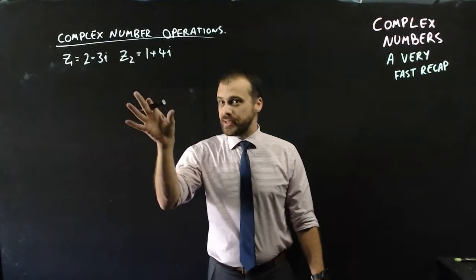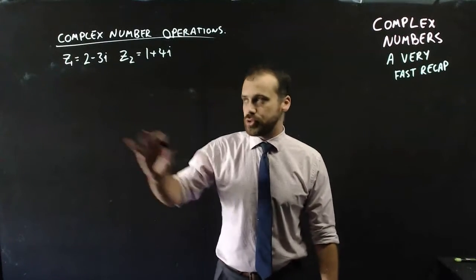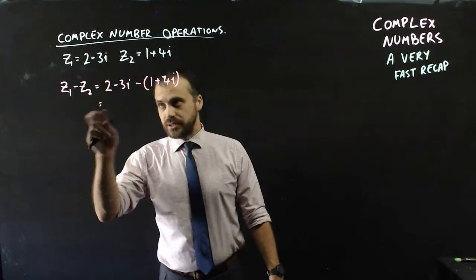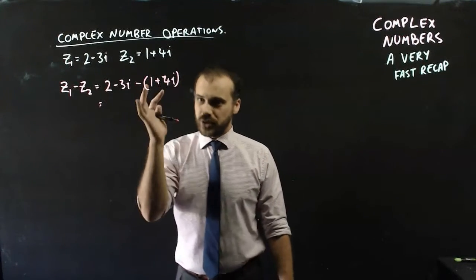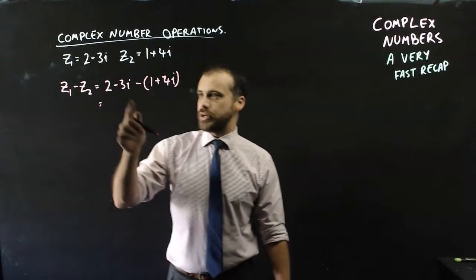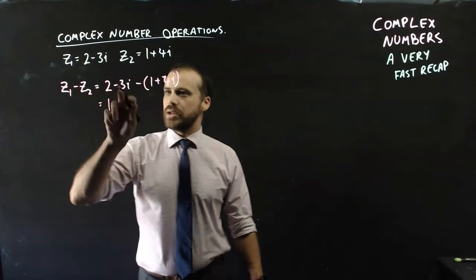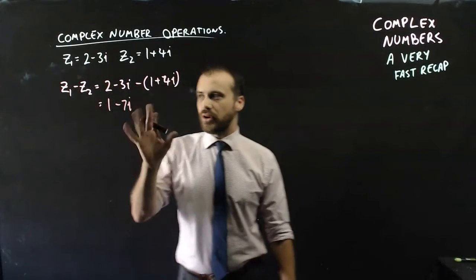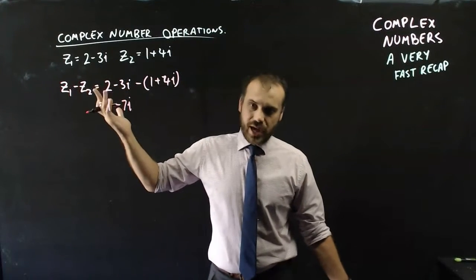We're just getting some bread and butter stuff, adding, subtracting, multiplying, all sorts of things with complex numbers, complex number operations. If I want to subtract these, I subtract the real from the real, and the imaginary from the imaginary. 2 minus 1 is 1. Negative 3i minus 4i is negative 7i. Addition, you just add them.